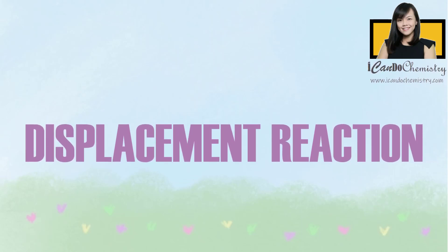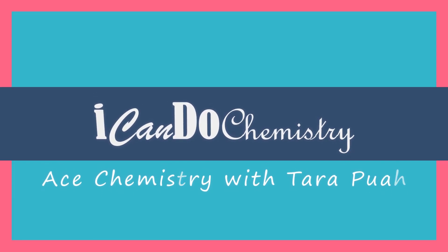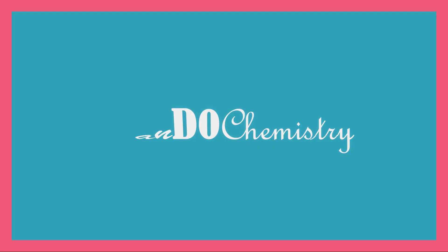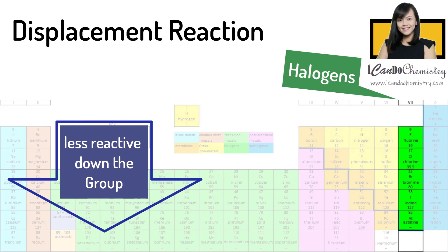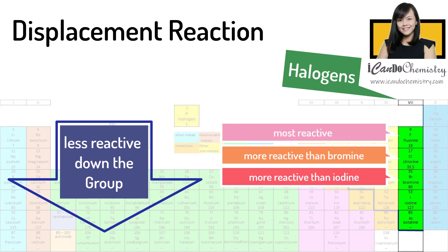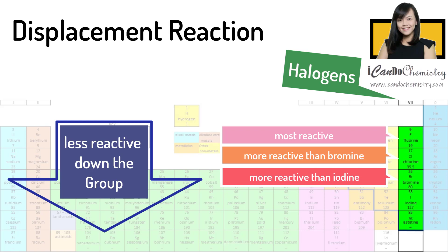In this video, we will focus on displacement reaction, a chemical reaction that group 7 elements undergo. Halogens are very reactive non-metals. The reactivity decreases down the group. Fluorine is the most reactive non-metal in the periodic table. Chlorine is more reactive than bromine, and bromine is more reactive than iodine.